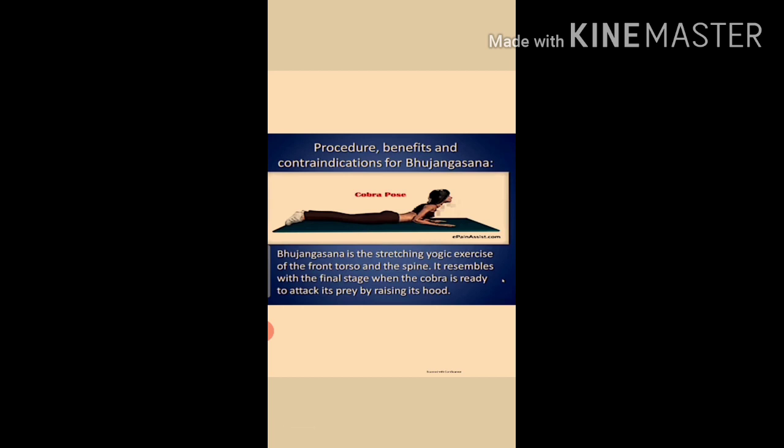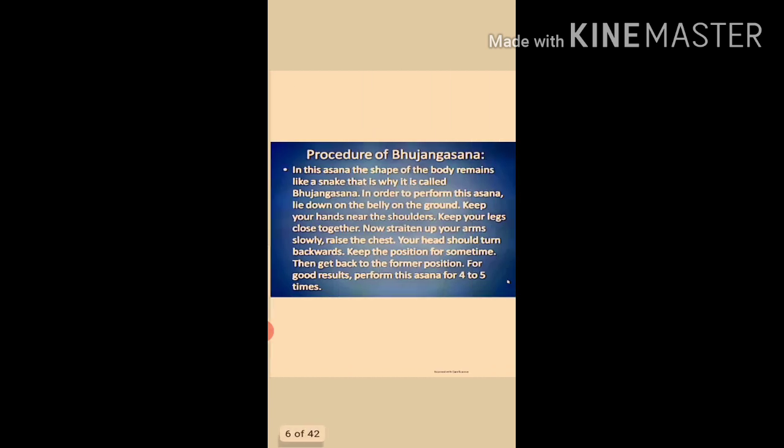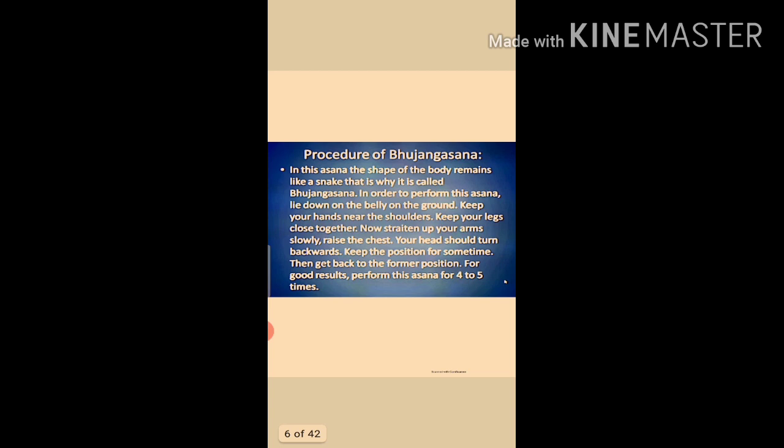Bhujangasana is also called the snake or cobra pose. It forms part of the Surya Namaskar. Bhujangasana is a stretching yoga exercise for the front torso and spine. The name comes from the example of a cobra ready to attack its prey by raising its hood.